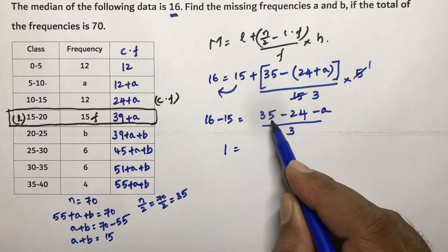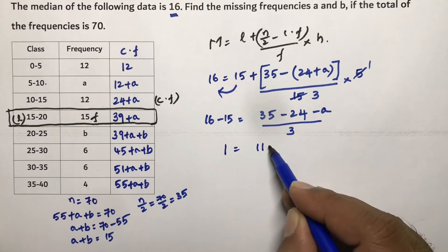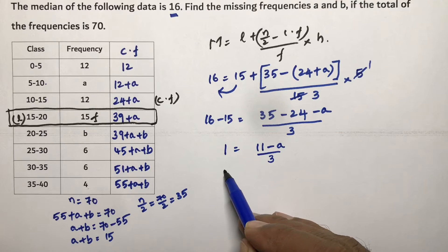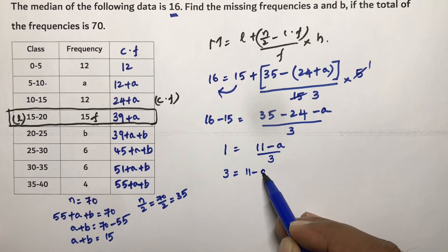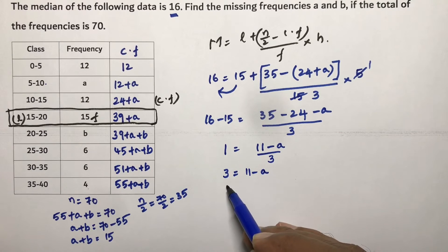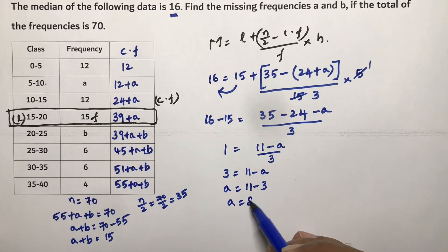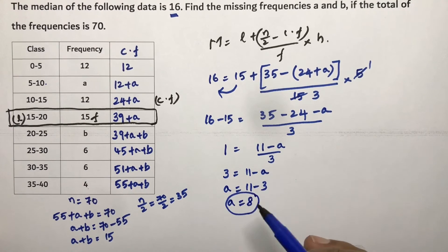1 equals 11 minus a by 3. If you cross multiply, 3 equals 11 minus a. And transposing, a equals 11 minus 3. So the value of a is 8.